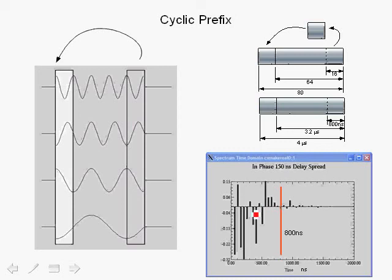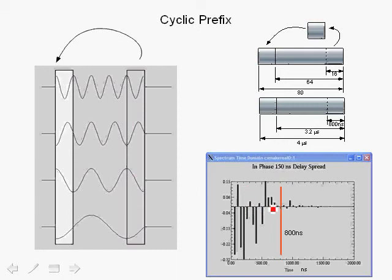With an RMS delay spread of 150 nanoseconds, the actual excess delay can exceed that by a factor of five, exceeding 800 nanoseconds. The red line marks the 800-nanosecond point. You'll notice the multipath impulse response goes beyond 800 nanoseconds. Even for 150 nanoseconds RMS delay spread, the impulse response can exceed 800 nanoseconds. If the RMS delay spread were 50 nanoseconds, the impulse response would have died out before 800 nanoseconds.